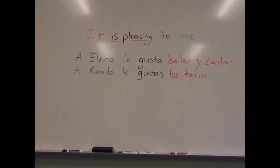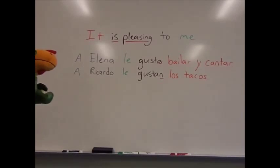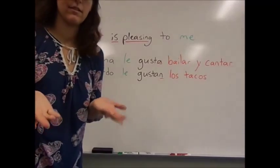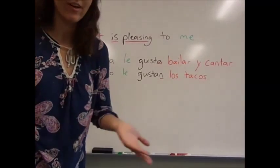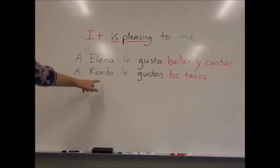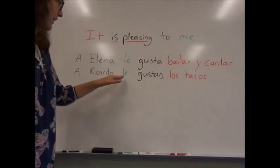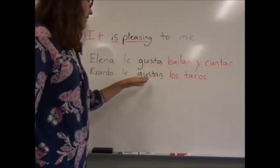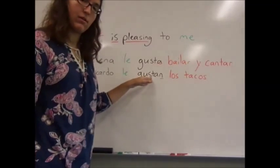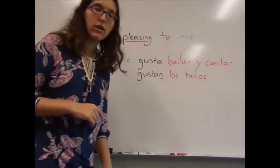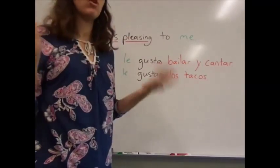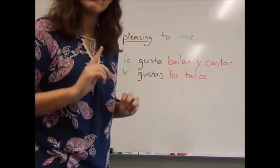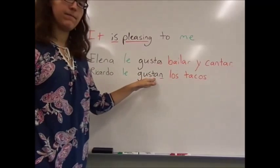Let's compare the sentence that we just looked at to a sentence about our friend Ricardo. Ricardo likes to eat tacos. Tacos are pleasing to Ricardo. So here we have a Ricardo to clarify who we're talking about. We have le because he is in the él form. It's pleasing to him. And we have gustan. Why do we have gustan? Los tacos are plural. That means there are multiple tacos. There could be two tacos. There could be a hundred tacos. No matter how many tacos there are, Ricardo will eat them all. That's why gustan is plural.